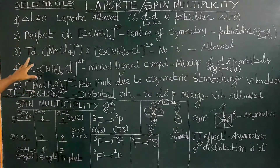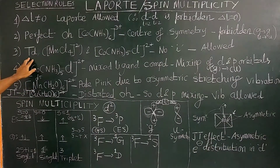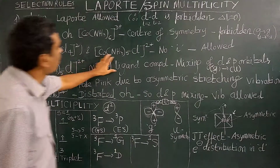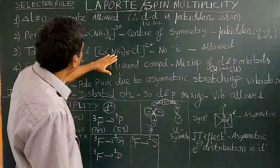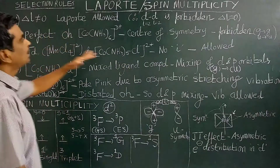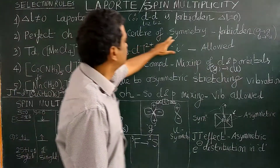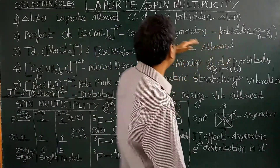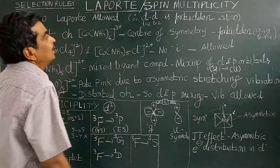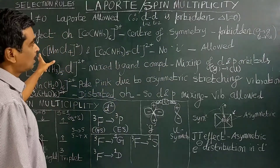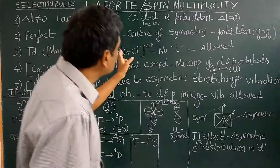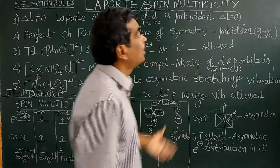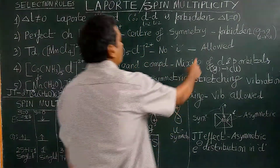Now, for tetrahedral complexes and mixed ligand complexes — for example, an octahedral complex that is not perfectly octahedral with no center of symmetry — the transition is allowed; it is the opposite case. Those complexes with no center of symmetry are Laporte allowed.